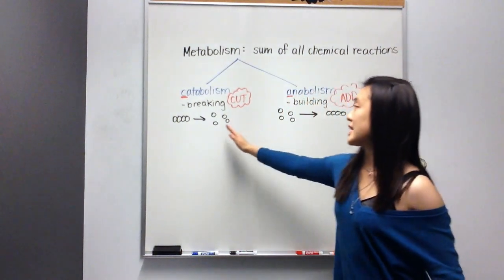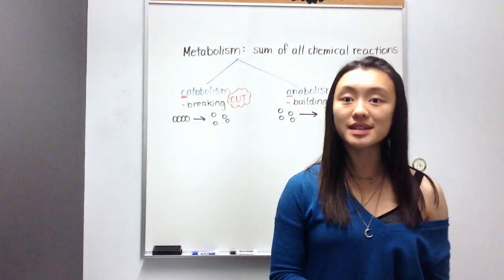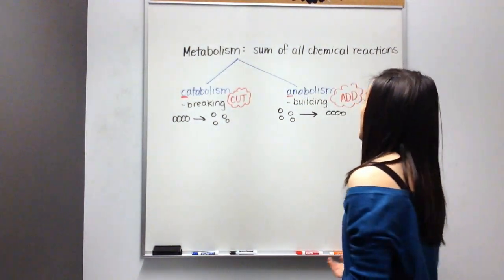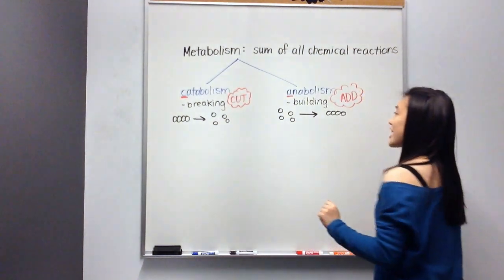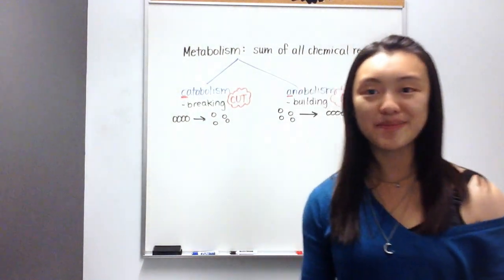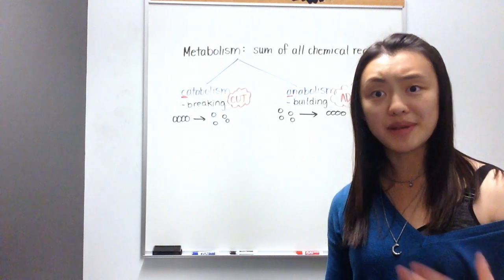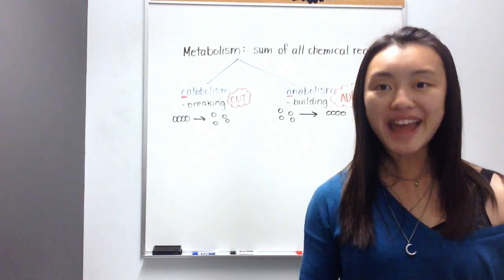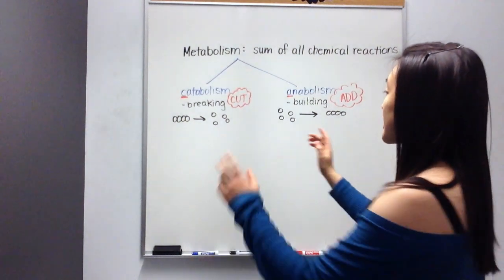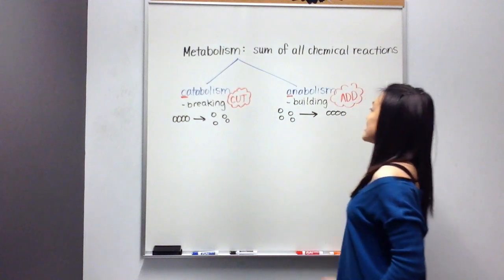Now that we know that there's anabolism and catabolism, it's easier to understand metabolism. Metabolism is simply the sum of all of our chemical reactions. So if we take all of our body's ability to break things, and we add it up to all of our body's abilities to build things, we end up with our body's metabolism, which is simply the sum of catabolism and anabolism. So you add these two together, you get your metabolism.